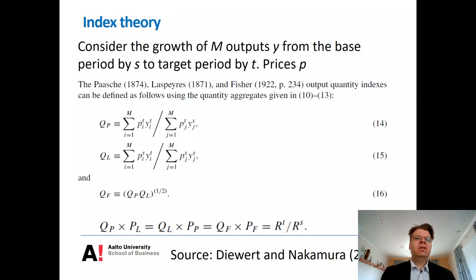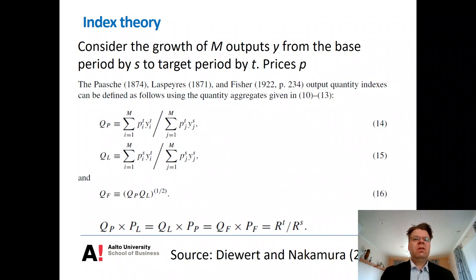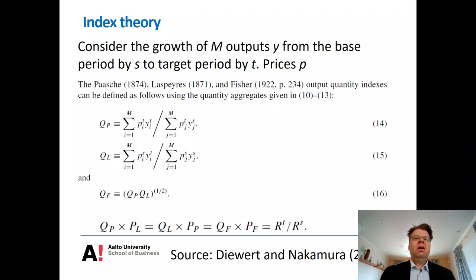The classical Paasche and Laspeyres indices do not have this nice property. To get the turnover change from those indices, you must multiply the Paasche quantity index with the Laspeyres price index, or vice versa. This asymmetry comes from the fact that Paasche and Laspeyres only consider either base period or target period prices. The nice feature of the Fisher index is that it considers prices of both periods, making it more symmetric with respect to price change.